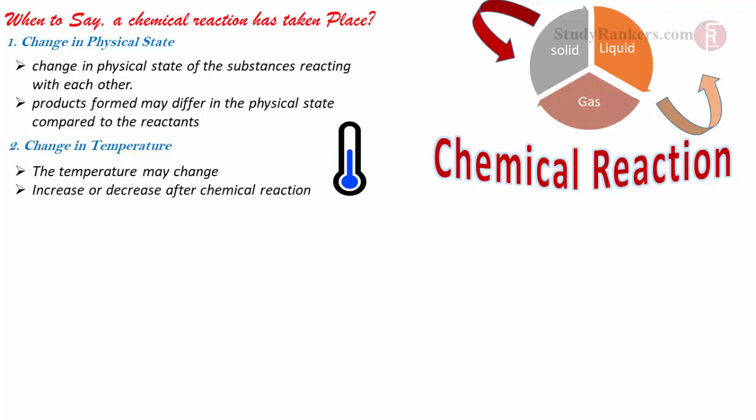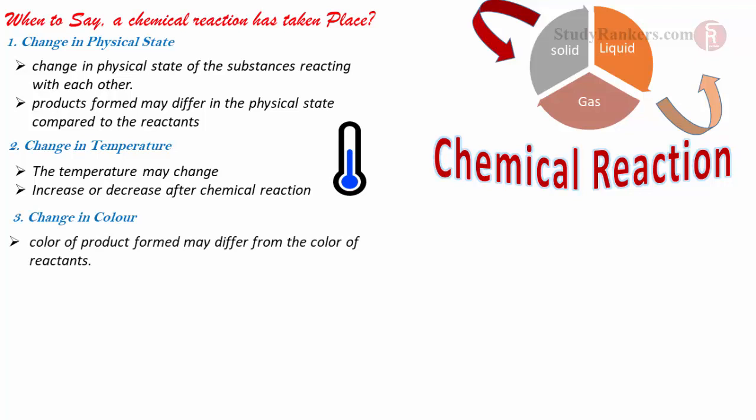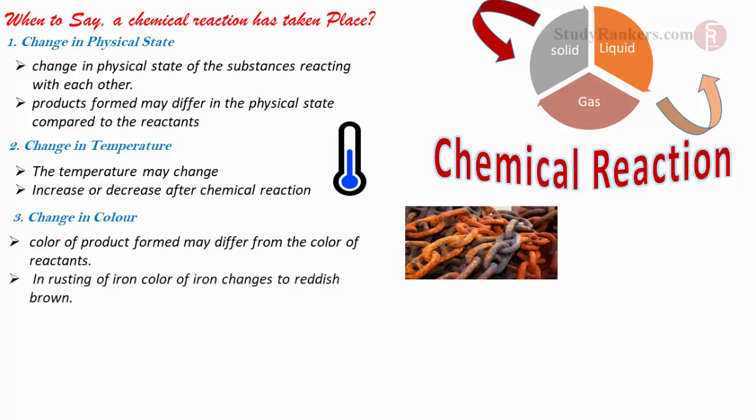The temperature may change when a chemical reaction takes place — it may increase or decrease. Change in color is another indicator. The color of the product formed may differ from the color of the reactant. In rusting of iron, the color of iron changes to reddish brown.